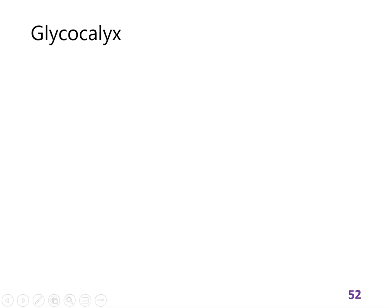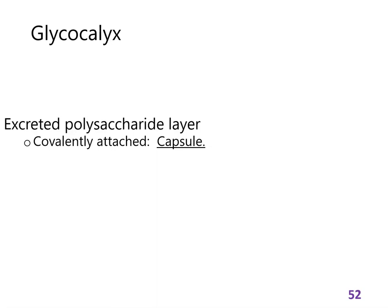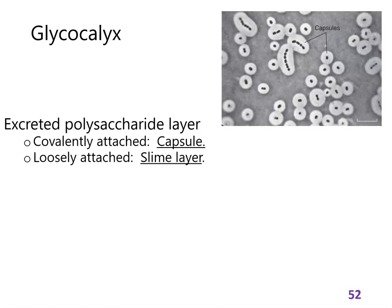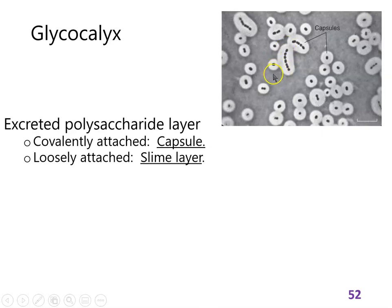The glycocalyx is the layer of carbohydrates that surrounds some cells — they're excreted but don't really leave the cell. If they're covalently attached to the cell, we call it a capsule; if they're loosely attached, we call it a slime layer. What you're seeing here is a capsule stain — it's a negative stain, meaning the dye is the dark stuff, and the glycocalyx repels the pigment, making light spaces with dark in between.